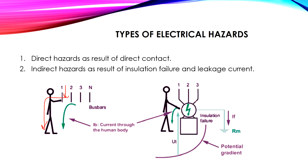The second type is indirect hazards. For example, if we have an electric motor supplied by three-phase power in a delta connection, the motor enclosure normally carries no current. However, in the case of insulation failure — say on phase two — a small leakage current passes through the enclosure. When a human touches the surface, current flows through them to the ground. This is called an indirect hazard, because it results from insulation failure and leakage current.